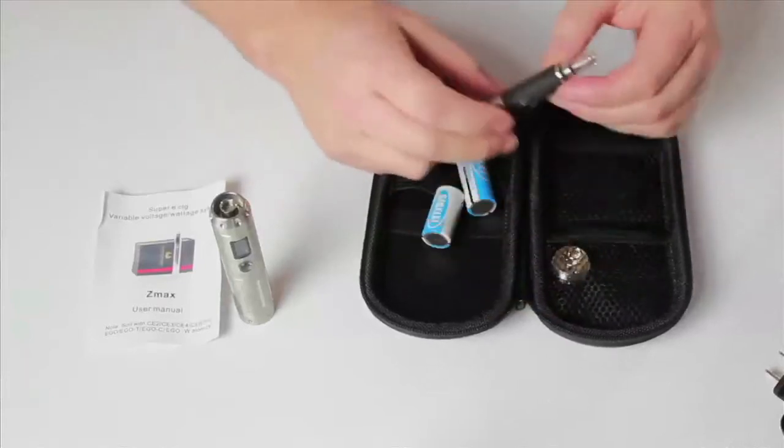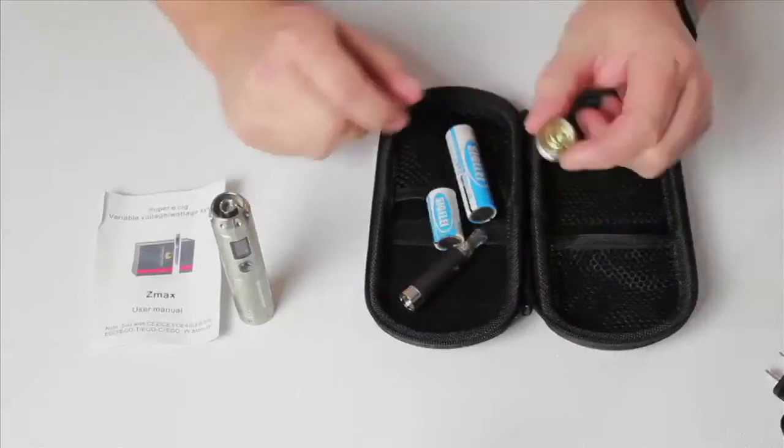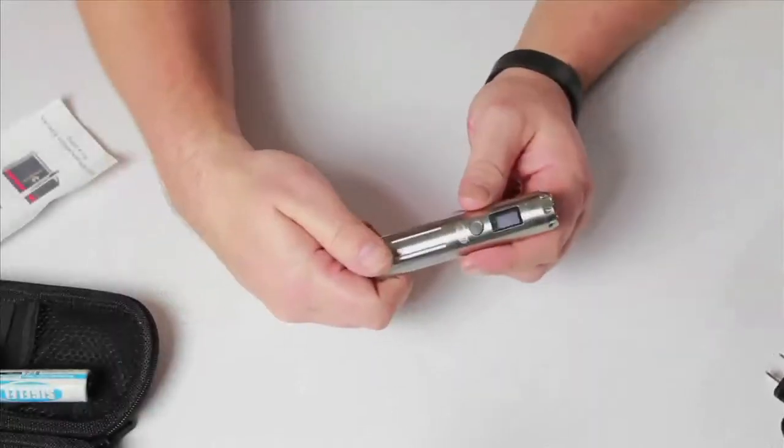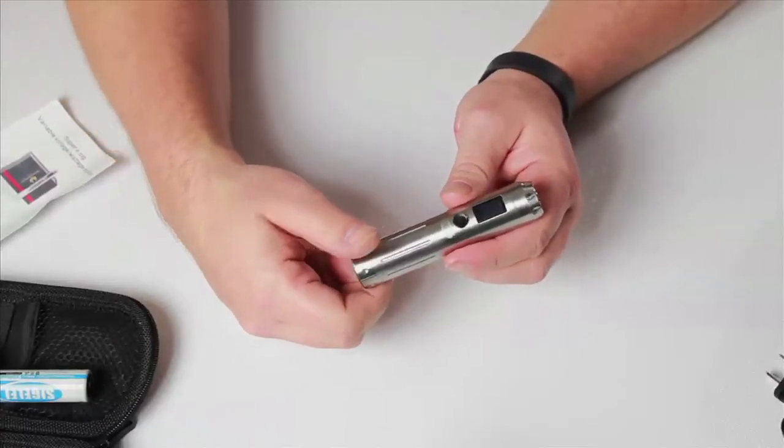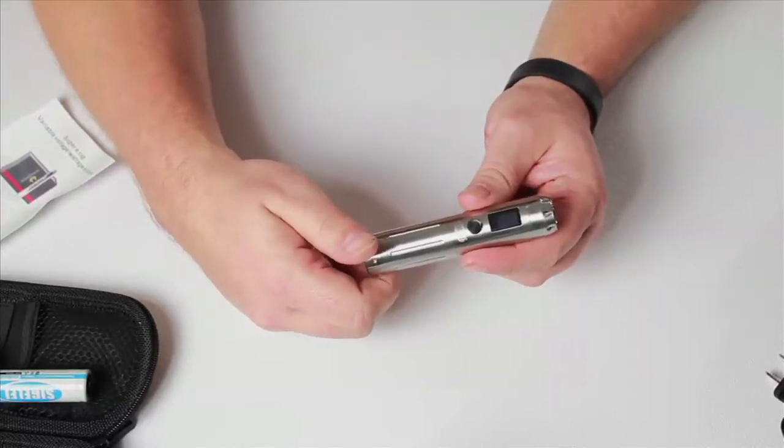You get an EVOD clearomizer, and a separate bottom cap for use with the smaller battery. The Cigeli is variable voltage, variable wattage, has quite a few settings.